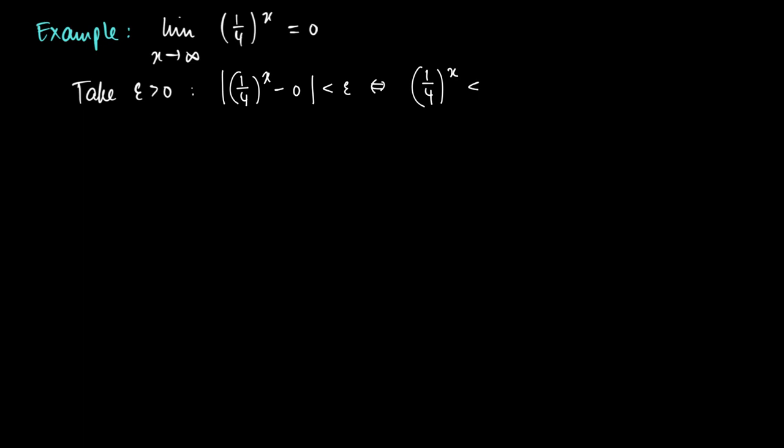This means that (1/4)^x should be smaller than epsilon. Now taking logarithms on both sides, we see that (1/4)log((1/4)^x) is larger than (1/4)log(epsilon). But why is that?